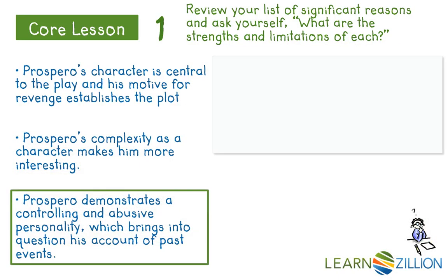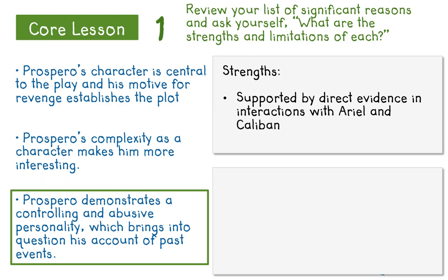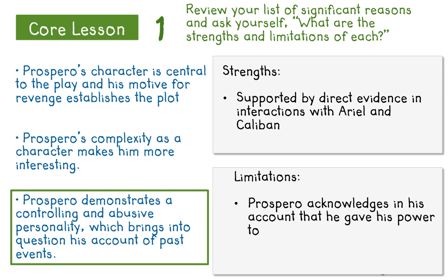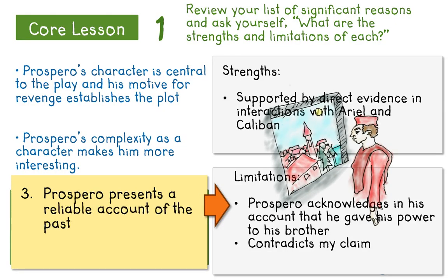Now let's examine the reason for the counterclaim. Its strength is that it is supported by direct evidence in Prospero's interactions with Ariel and Caliban. Its limitation, on the other hand, is that Prospero acknowledges in his account of past events that he gave power over to his brother because he was studying. This limitation is actually good for my claim because I can use it as evidence in my rebuttal. So in my paragraph, I'm going to want to point out in my rebuttal that though Prospero does demonstrate a controlling and even abusive personality at times, he does seem to provide a reliable account of past events.